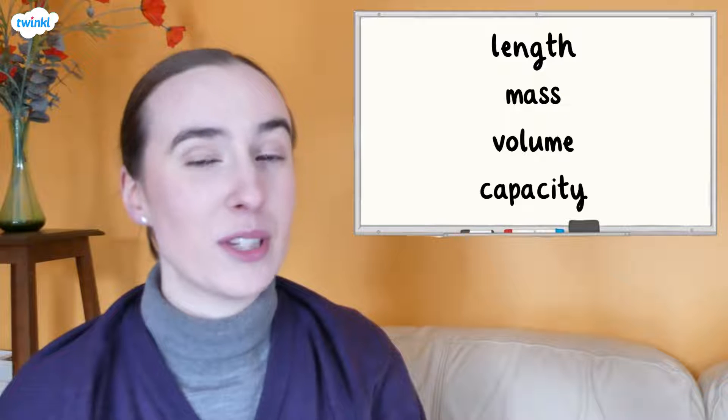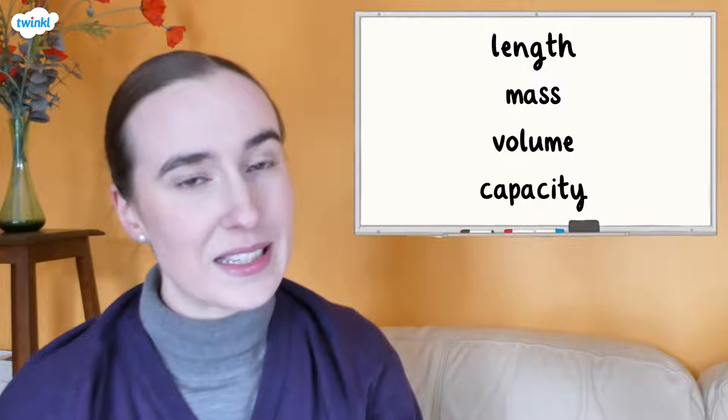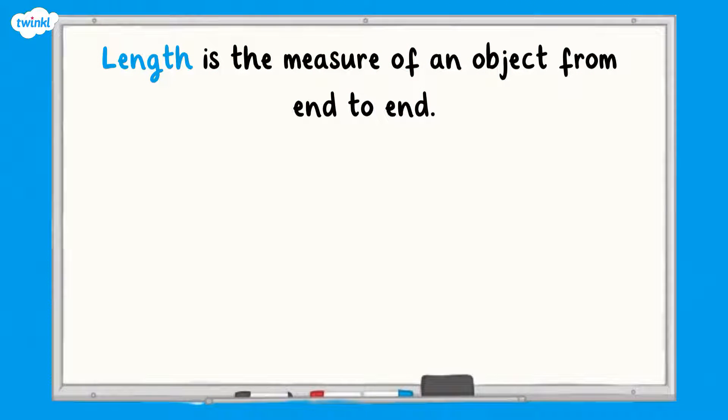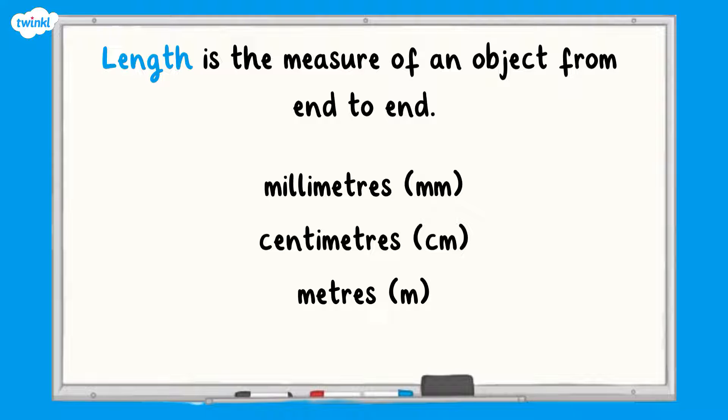It's important to remember the key differences between length, mass, volume and capacity. Length is a measure of an object from end to end and can be measured in millimetres, centimetres, metres or kilometres.